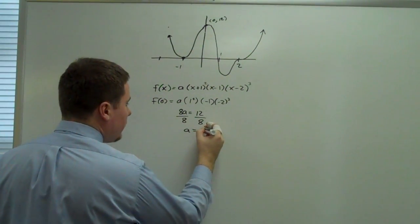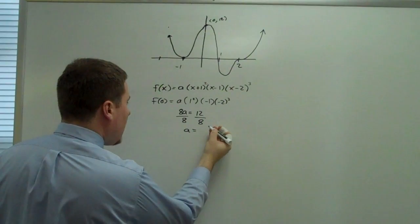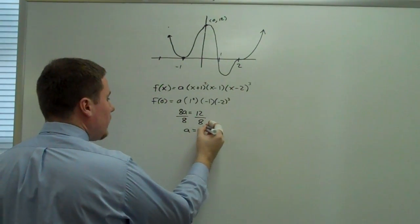I get a is equal to, let's see, divide out a common 4. So that would be 3 halves.